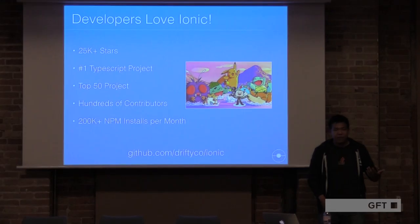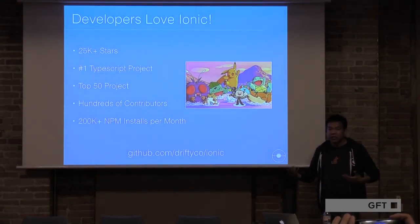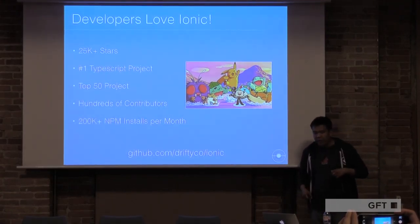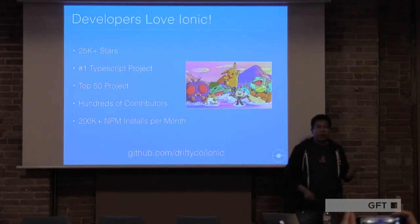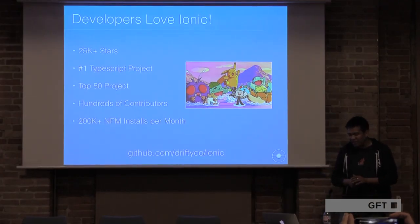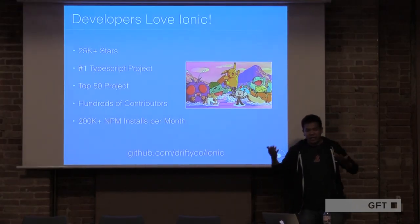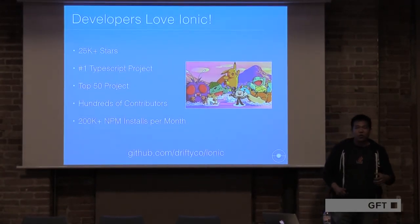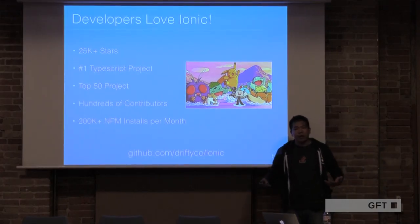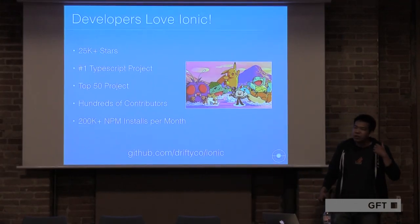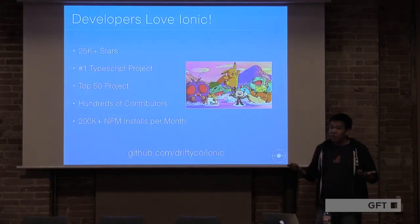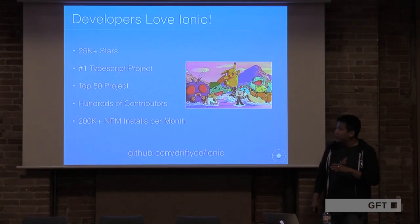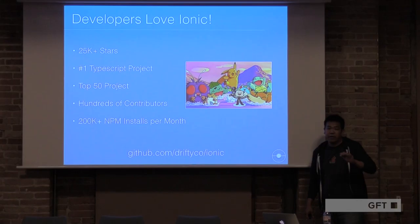The developer community is very important to us. Pretty much the majority of what Ionic does as a company is the open source framework. Developers love Ionic — we have over 25,000 stars on GitHub. Also, the number one TypeScript project on GitHub, even more stars than Visual Studio Code. Various times we've been anywhere from a top 20 to top 50 project on GitHub overall. And really importantly, hundreds of contributors to the framework. So when you work with Ionic, you really are joining a very large community of developers — JavaScript developers, Angular developers, and mobile developers. Over 200,000 NPM installs per month for the Ionic CLI.